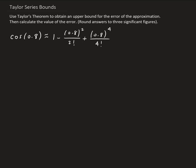In this example, we want to use Taylor's theorem to obtain an upper bound for the error of the approximation, then calculate the value of that error. We're given the Maclaurin approximation for cosine of 0.8 — specifically, the Maclaurin polynomial of degree 4.